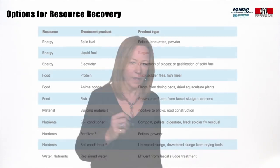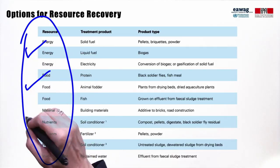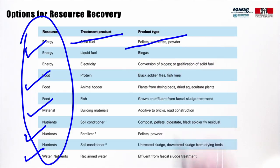First, we focus on the type of resource recovery that could be achieved: energy, food, material, nutrients, or water. Then we think about what type of products could fill that resource need — for example, solid fuels versus liquid fuels, or soil conditioners versus fertilizers. Then we think of the form that treatment products could take to fill that need. For example, animal feed could be produced by black soldier fly larvae, fish from aquaculture, or plants from drying beds.